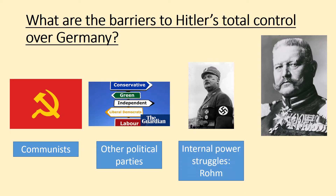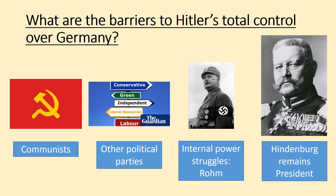You've also got the internal power struggles happening within the Nazi Party, particularly Röhm, who is leader of the SA. He is rumoured to want to challenge Hitler for the top spot. And of course the major one was Hindenburg remaining president — though he dies a few months after Hitler becomes Chancellor, and that's when Hitler becomes the Führer. So we're kind of ignoring that last point today.